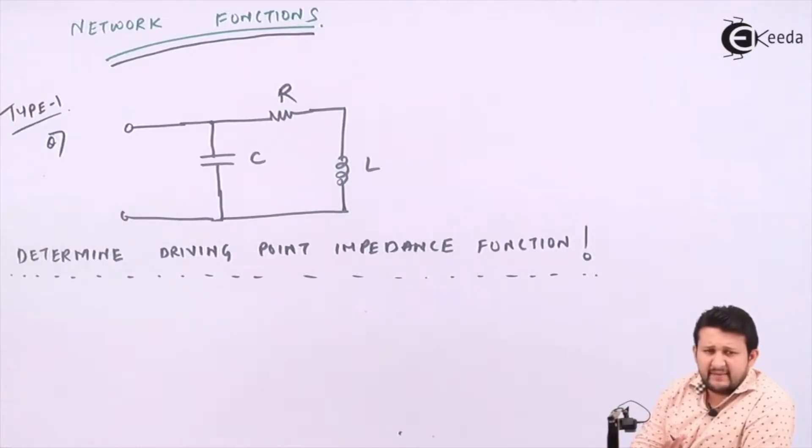When I say driving point impedance, I mean Z of s. So if I need to find driving point impedance, I just need to remember two basics: one is parallel, one is series. You have to combine the whole network using parallel and series combinations to find the value of Z of s.